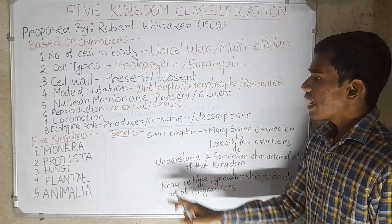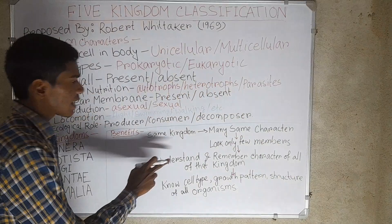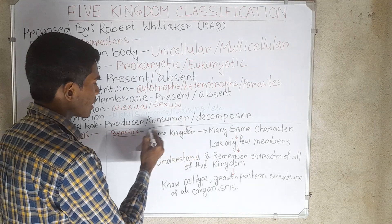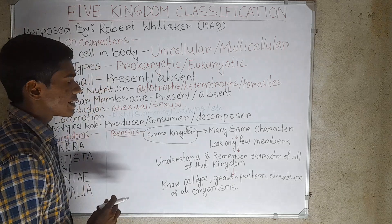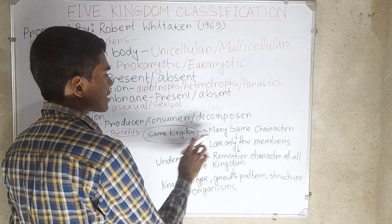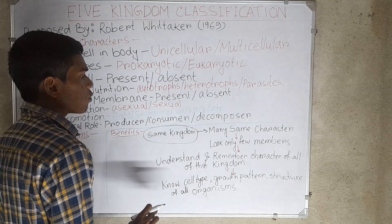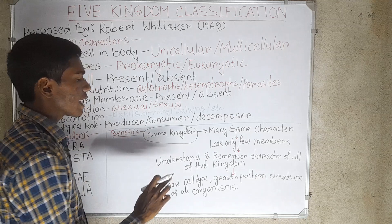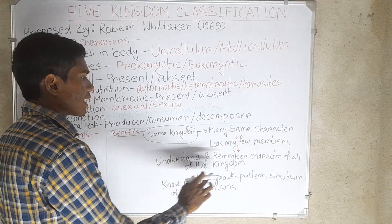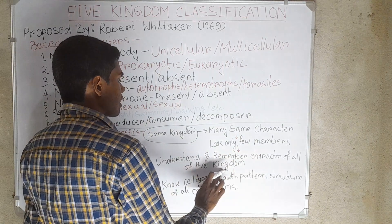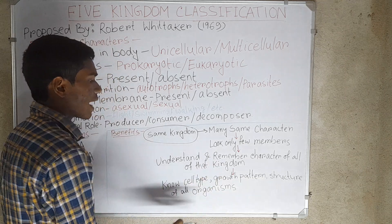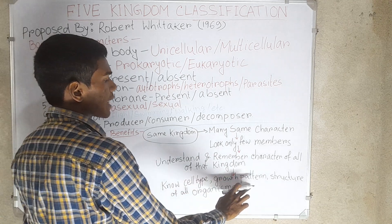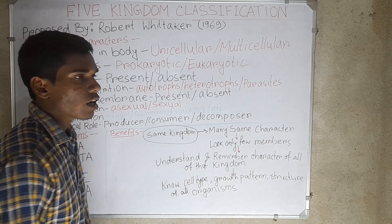Benefits of five kingdom classification: all organisms of the same kingdom are almost the same in their characters. Many characters are shared, so if we look at only a few organisms of the same kingdom, we can easily understand and remember the characters of all other organisms of that particular kingdom. We can know the cell type, growth pattern, structure, and all other characters of those organisms.